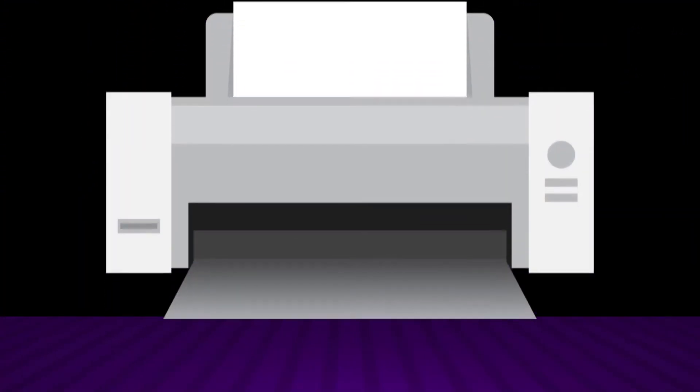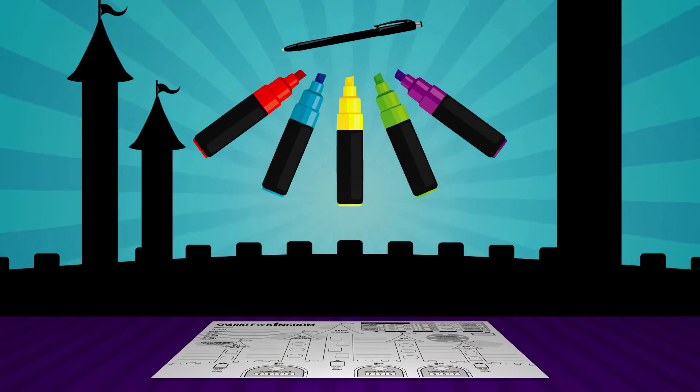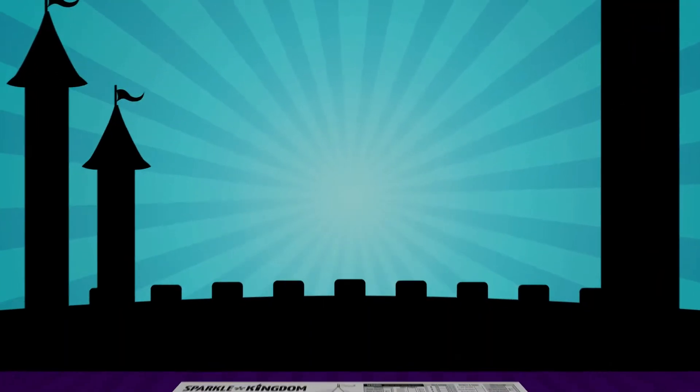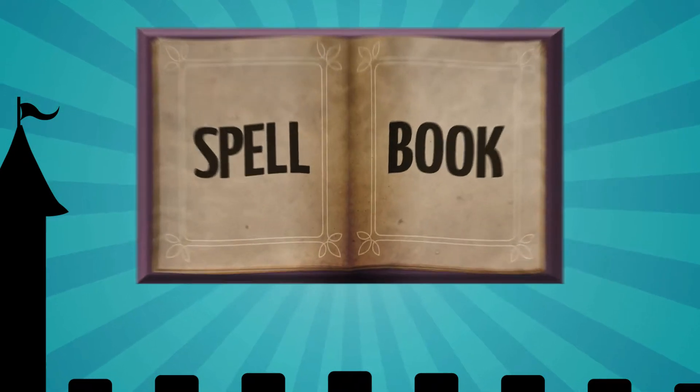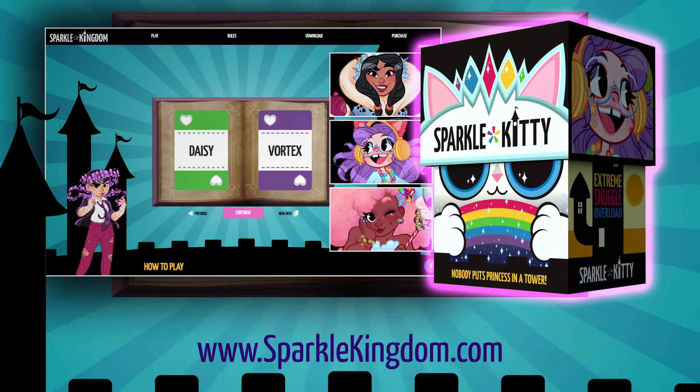Each player will need to print out a copy of the Sparkle Kingdom play mat and gather some colorful art supplies. All players will also need to be able to see the digital spell book via video call or use a copy of the original Sparkle Kitty card game at home.